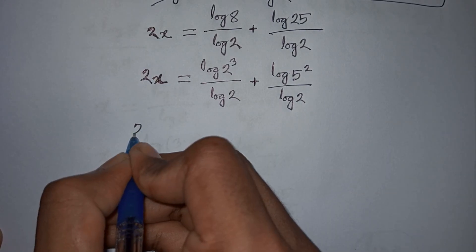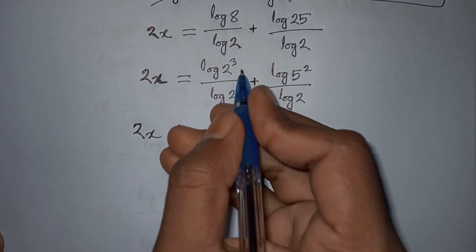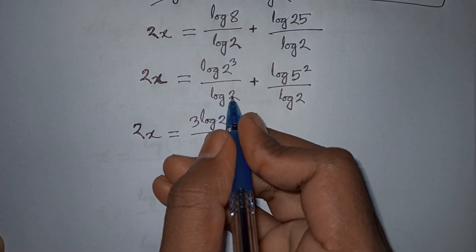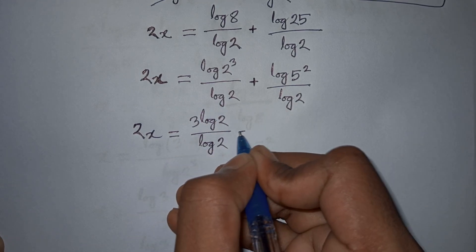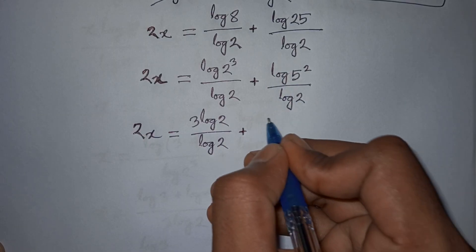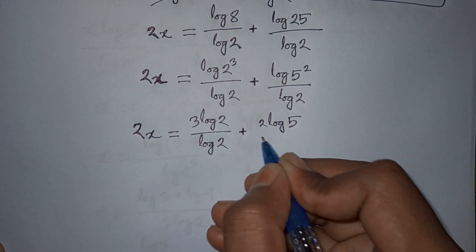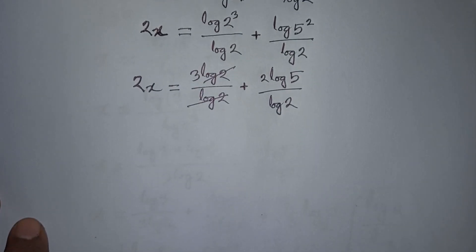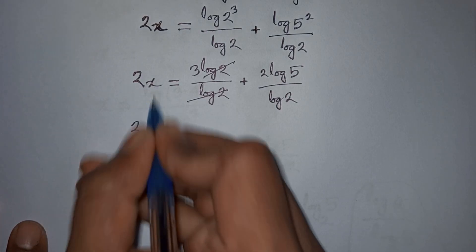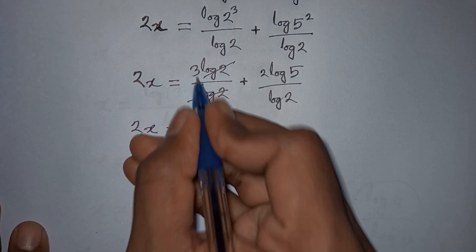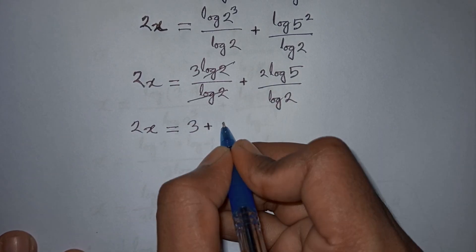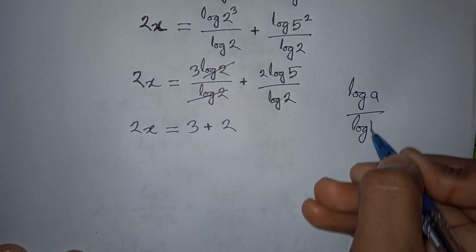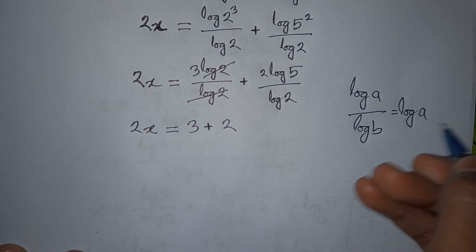In the next step, 2x equals this power 3 will move to the front giving 3·log 2 divided by log 2, plus this power 2 will move to the front giving 2·log 5 divided by log 2. So it will be 2x equals 3 plus 2·log 5 divided by log 2. We apply the formula log A divided by log B equals log_B(A).